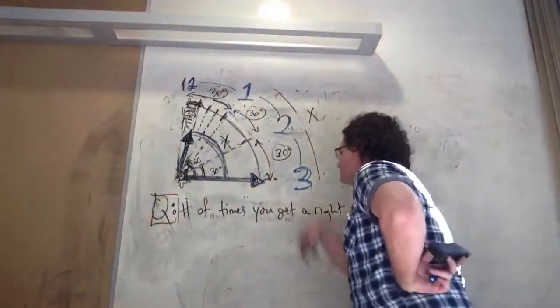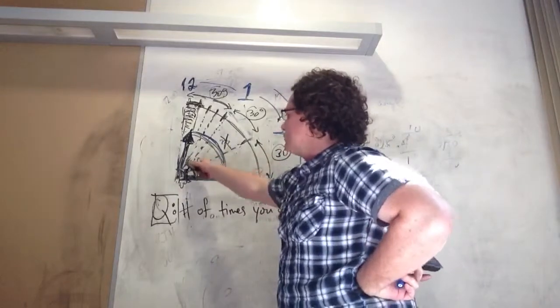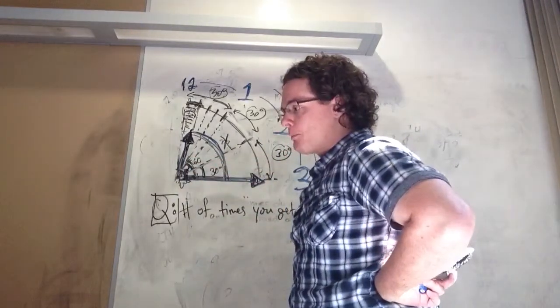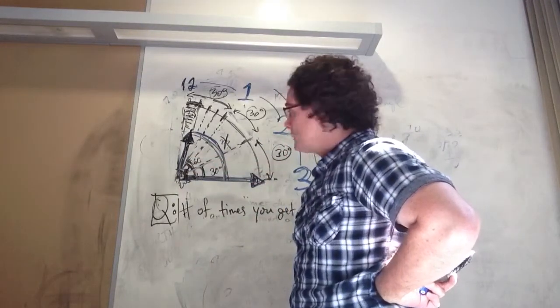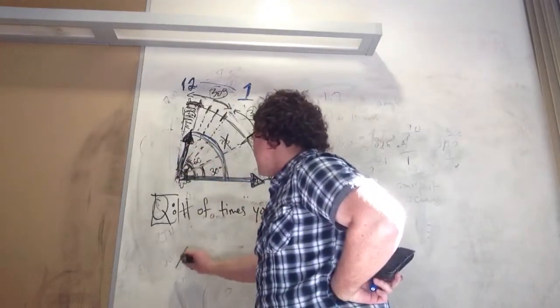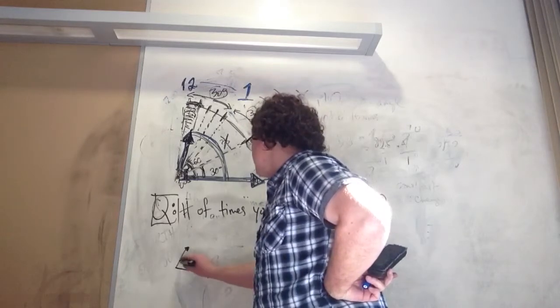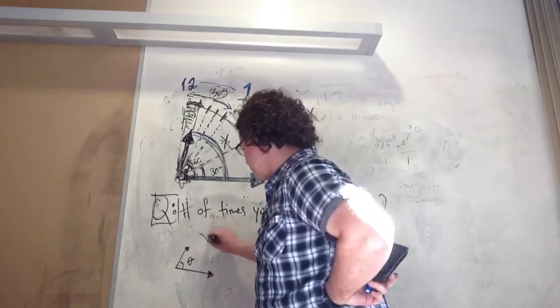Take two. We're trying to figure out how many times this angle becomes 90 degrees in a 24 hour period. This angle right here, the angle between the minute hand and the hour hand of a traditional clock.